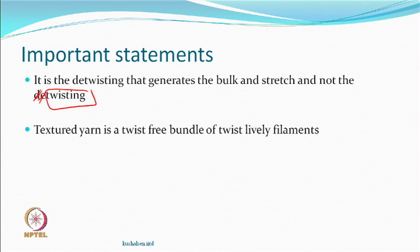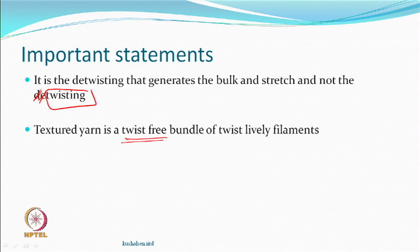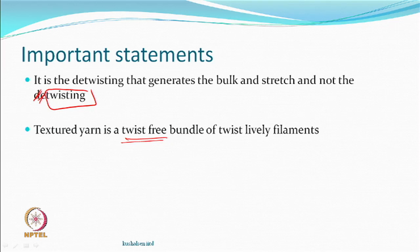Textured yarn is a twist-free bundle of twist-lively filaments. There is no twist in the textured yarn. While we started with the multifilament yarn, did twisting, did setting, and each filament remembers some of the path traversed during the twisting process — there is no twist in the textured yarn. But every filament is twist-lively, as if the energy is stored in them and they want to release the energy.